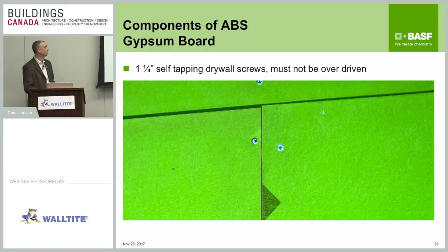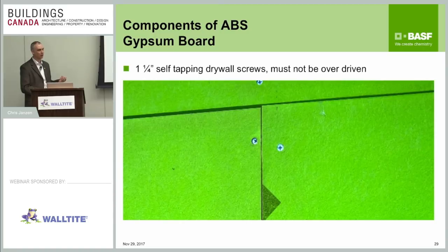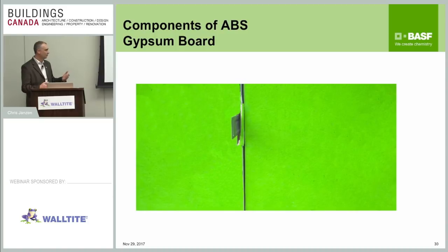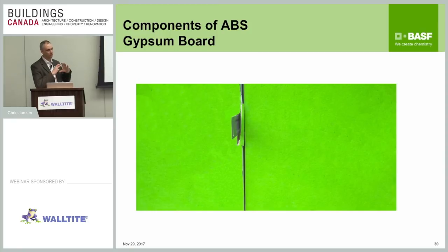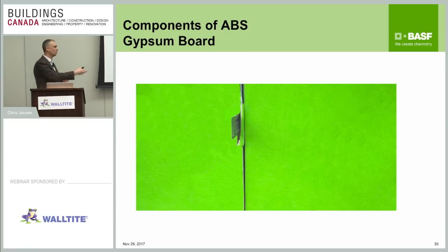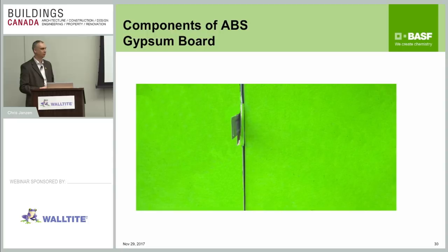Continuing with proper fastening: screws can't be overdriven. Of the three screws in this picture, basically one of them is right — the other two are overdriven past the fiberglass mat sheathing on the exterior gypsum, so they're not really doing anything at that point. The boards should also be tight. The gap bridging ability of spray foam is typically a quarter inch. The main reason is that you're spraying foam at about 1,000 PSI — once you start getting more than a quarter inch gap, the foam can start going through those gaps to the other side of the wall assembly, where it could overspray onto other trades or materials.